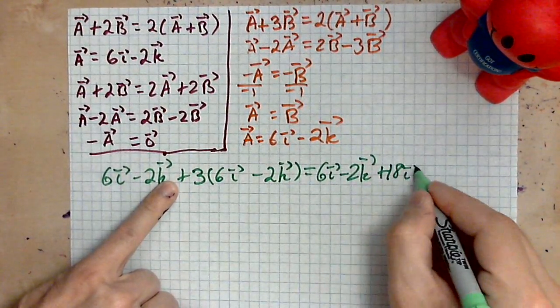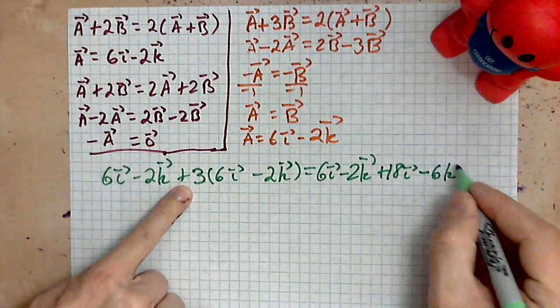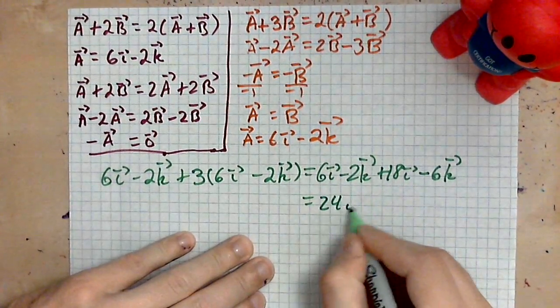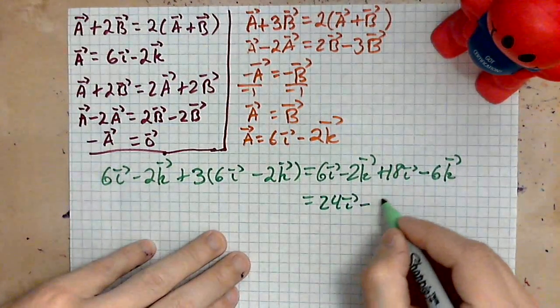Plus 18i and then minus 6k. So simplify this line: you have 6i and 18i is 24i, and the negative 2k minus 6k is negative 8k.